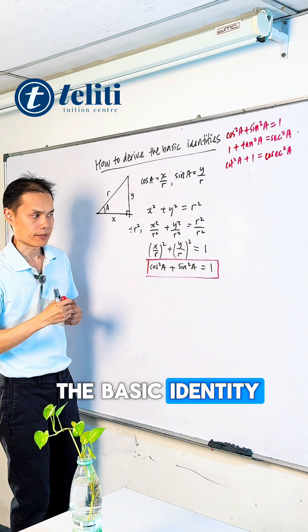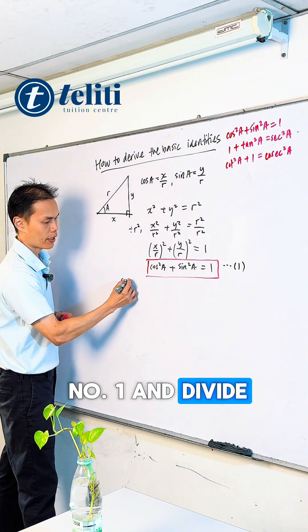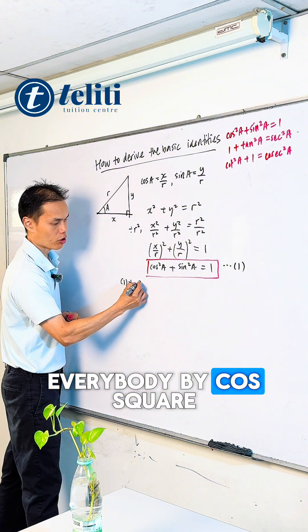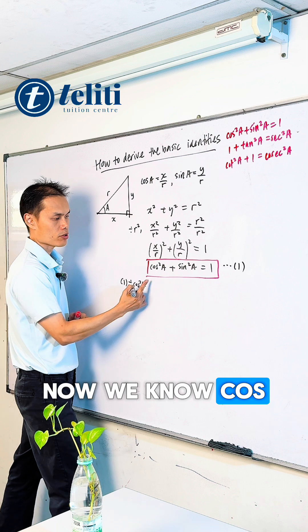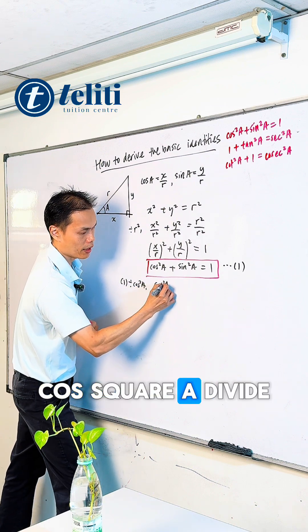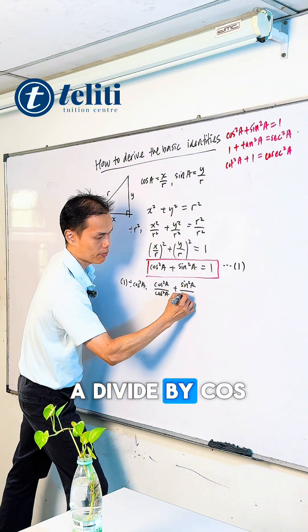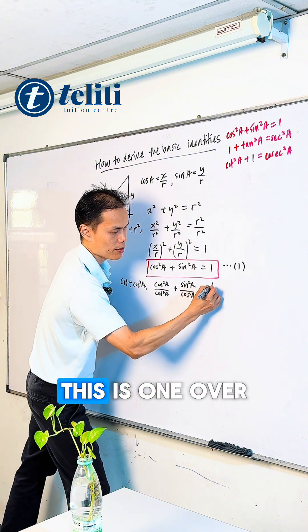Let's call this equation number 1. I'm going to take equation 1 and divide everything by cos²A. We get cos²A/cos²A, which is 1, equals sin²A/cos²A + 1/cos²A.